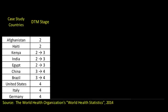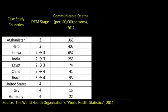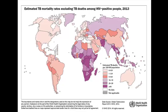Now let's see some evidence of this transition model using our case study countries from the DTM stages. When we look at communicable deaths, more people die per 100,000 persons in stage two and stage three countries from communicable or infectious diseases. We can see this on a map — those case study regions with continued stage two and stage three characteristics also have higher rates of TB deaths, including tuberculosis deaths among people with HIV, showing very clear geographic patterns.